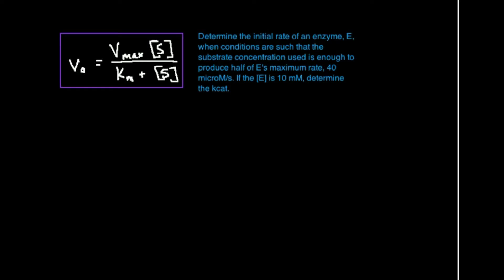We do know something else that's very important: we have enough substrate concentration to produce half of the enzyme's maximum rate. What did we learn in some of the past videos? We looked at the proof in the last video. We said that the substrate concentration at one half of the Vmax is equal to the Michaelis constant, or the Km. That's pretty handy because we're dealing with half of the enzyme's maximum rate, so our initial rate is one half of the Vmax.